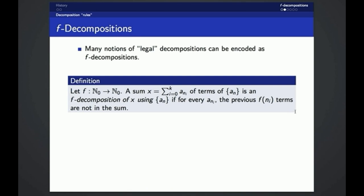If F is a function from the naturals with zero to the naturals with zero, then a sum x equals sum from i equals zero to k of a sub n sub i, of terms of the sequence a sub n, is called an F decomposition of x using the sequence a sub n, if for every term in our decomposition, a sub n i, the previous F of n i terms are not in the sum.